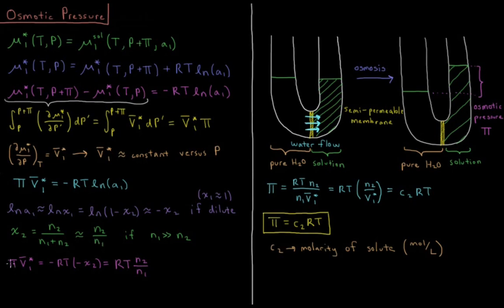So we have: osmotic pressure π times the molar volume of the pure solvent equals minus RT times minus χ₂. Since ln(A₁) ≈ −χ₂, this gives RT times N₂/N₁ after substitution. Solving for osmotic pressure: π = RT × N₂ / (N₁ × V̄₁*).